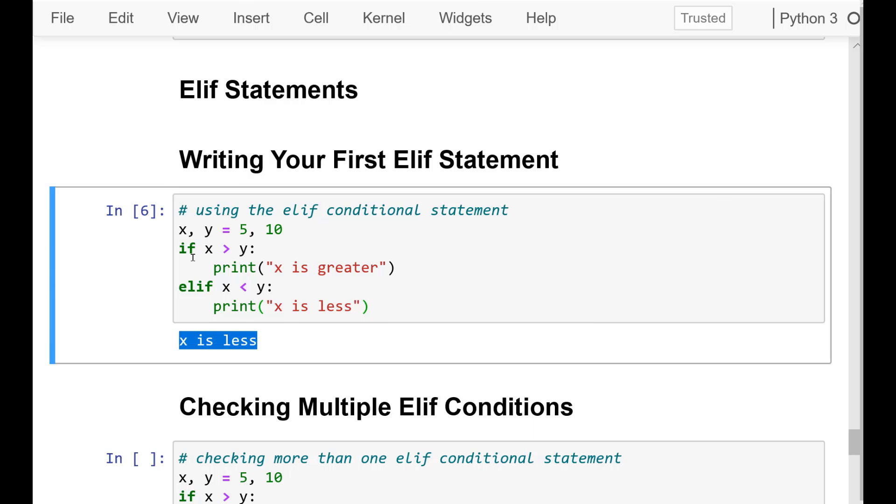Run that cell. Notice that the output is x is less. It checked the initial if statement, but since that returned false it moved to the elif conditional statement. That statement returned true and the block of code within it ran.